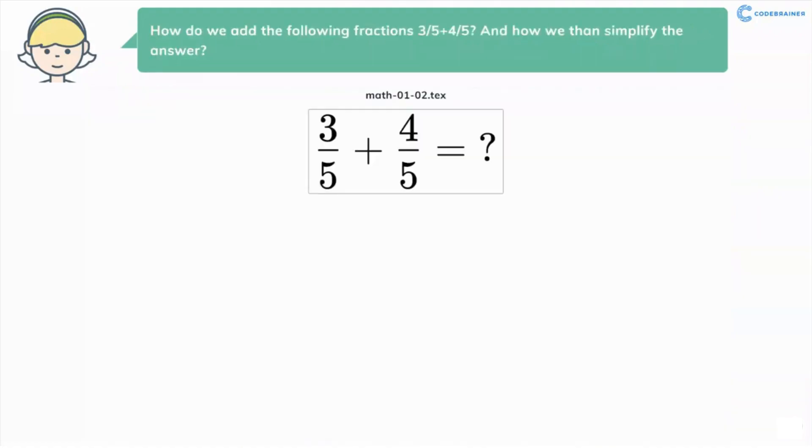How do we add the following fractions 3/5 + 4/5? And how do we then simplify the answer?